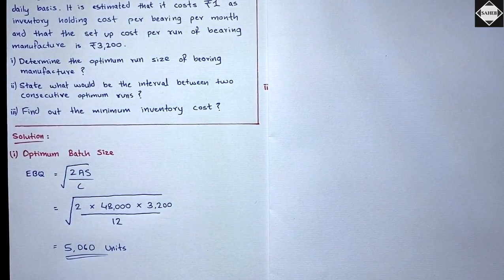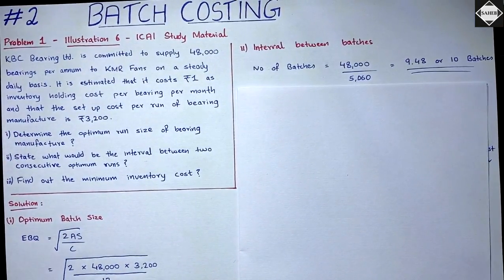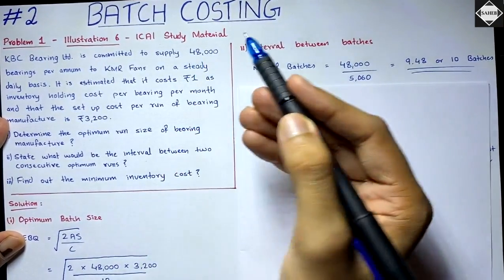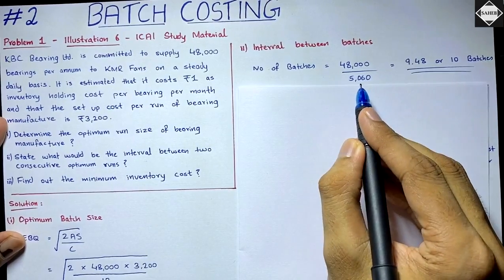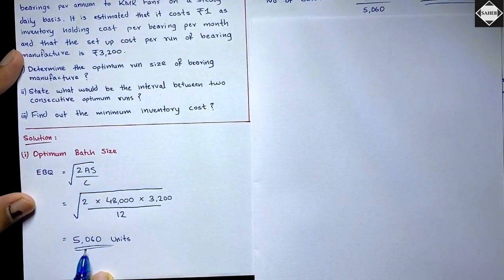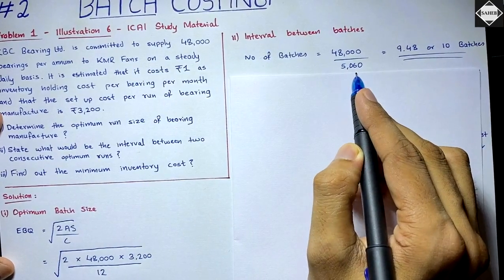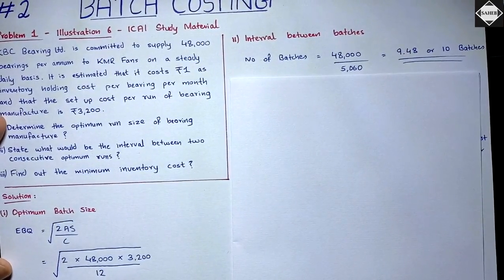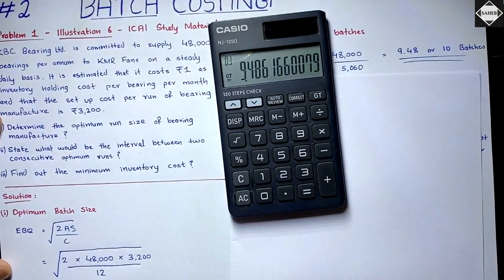To calculate the interval, we first need to know how many batches the company has to produce. The company needs 48,000 bearings in a year. Each batch size is 5,060 units. So number of batches = annual demand ÷ EBQ = 48,000 ÷ 5,060 = 9.48.